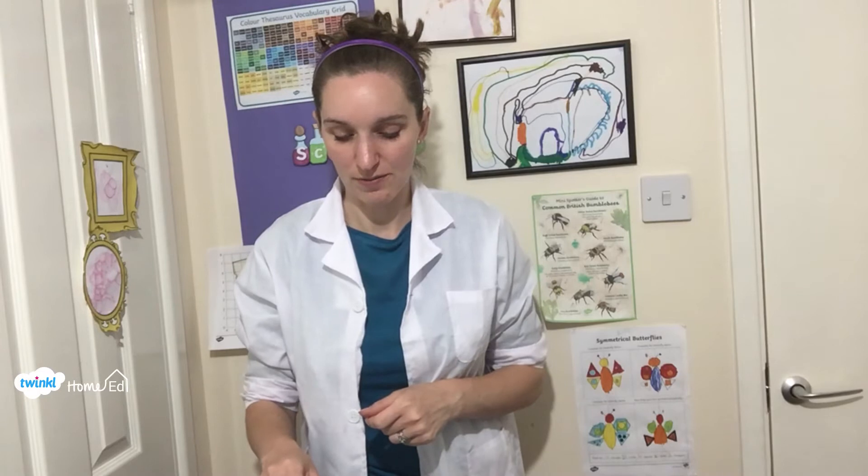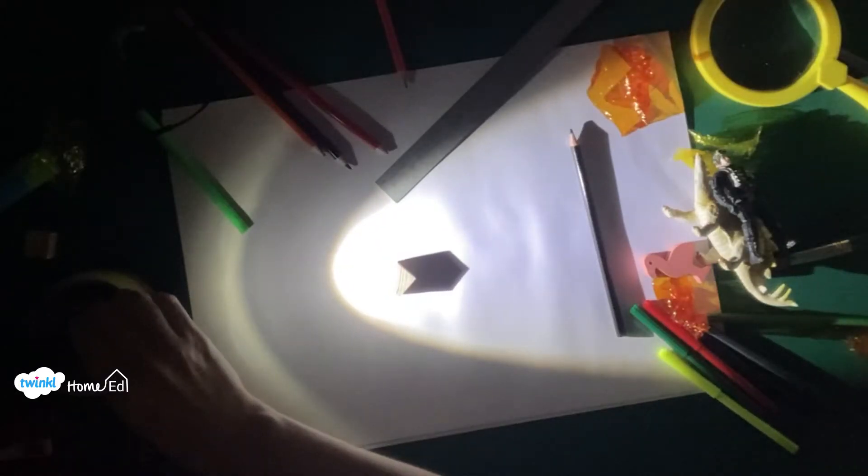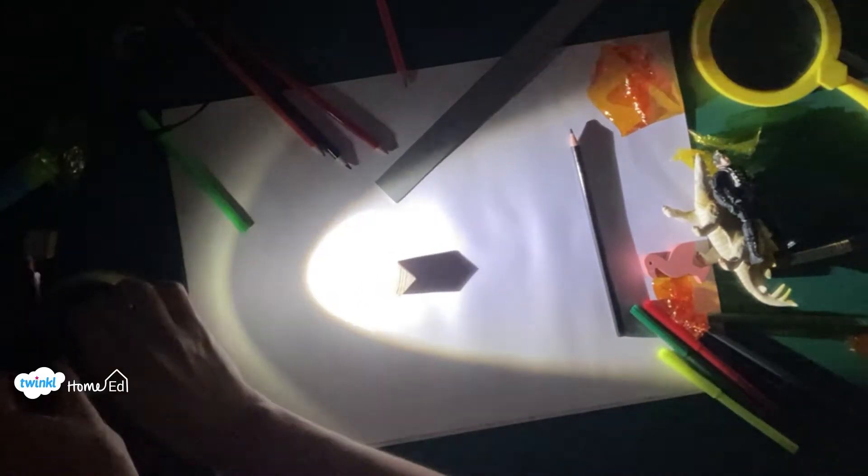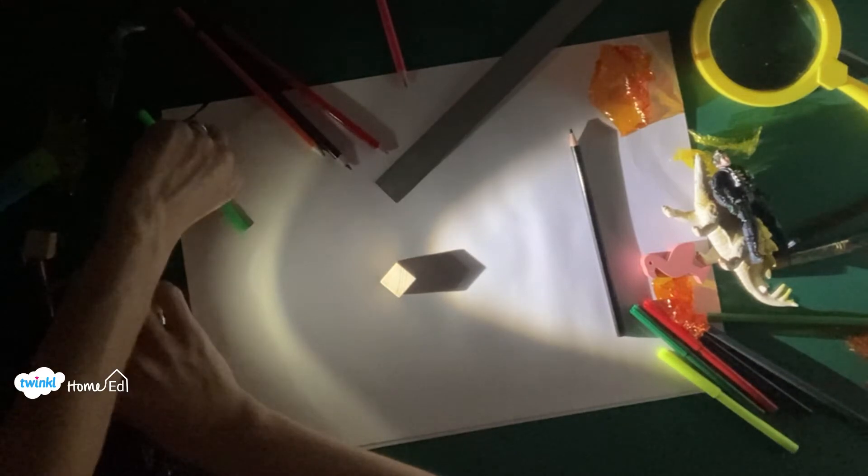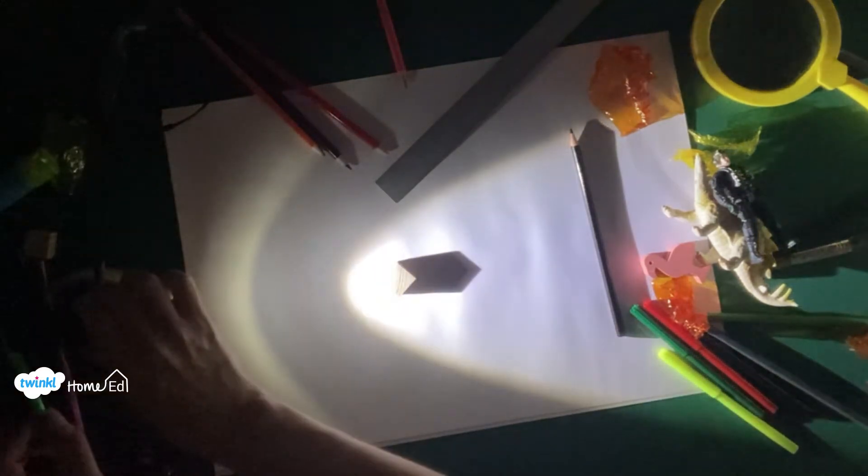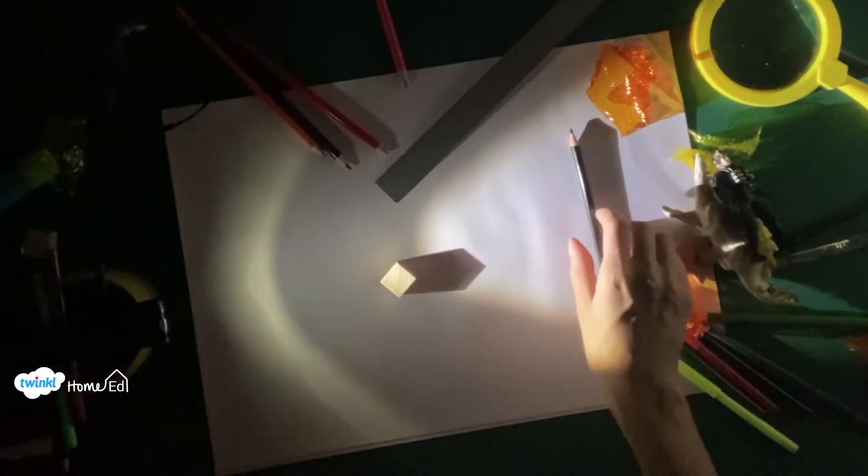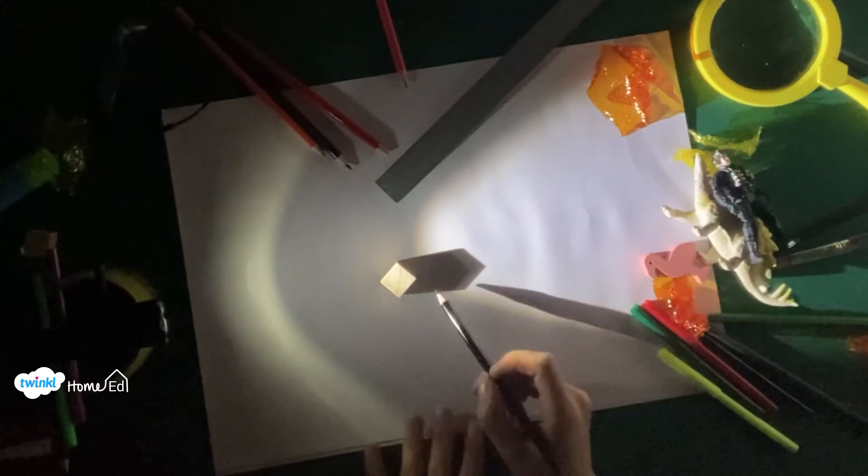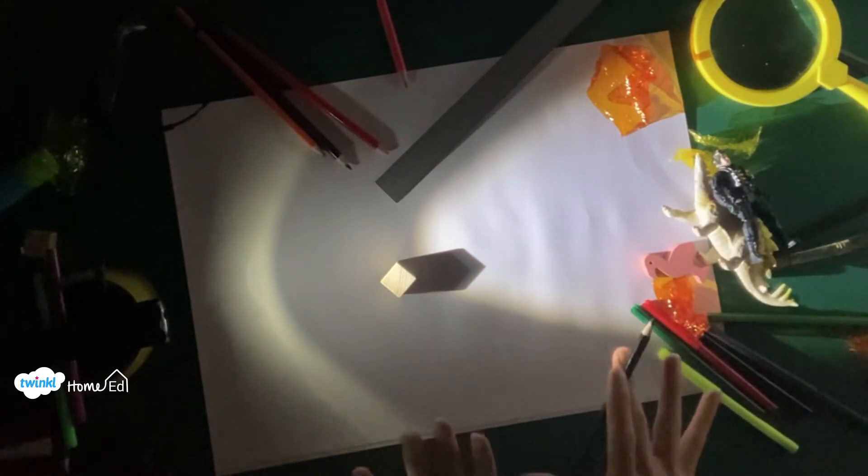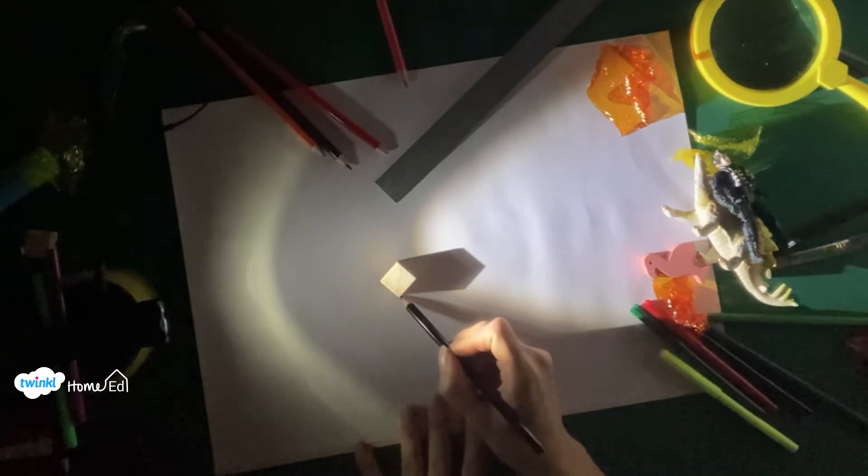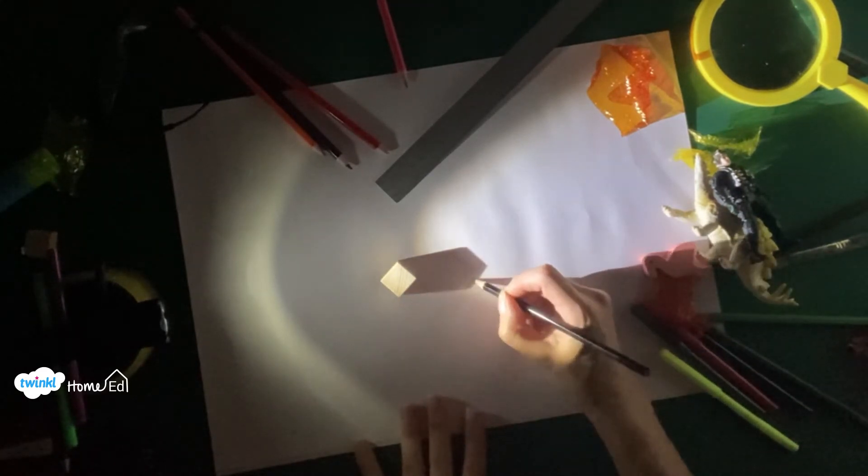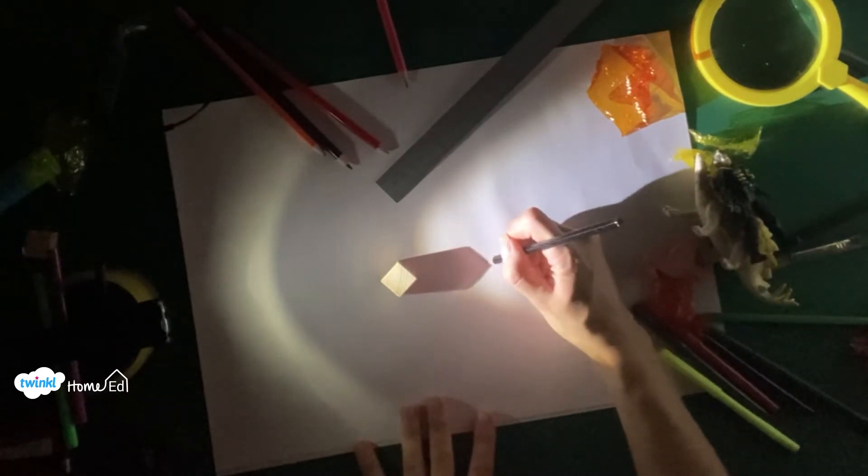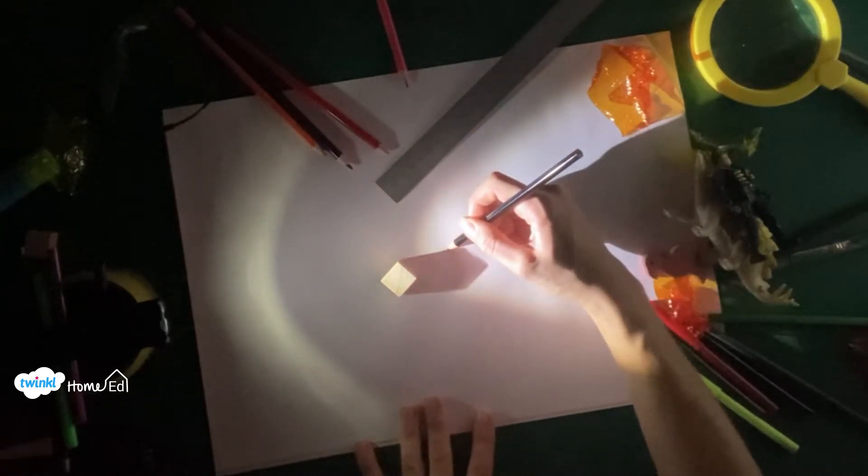So the first thing we're going to do is just look at the shadows that are being formed by an object. I'm starting with a little block to show the shadow being formed by my block. I'm going to put my torch on the little stand and you can see the shadow being formed. This is a really fun one for young children because they can practice their hand-eye coordination drawing around the block and drawing around the shadow.